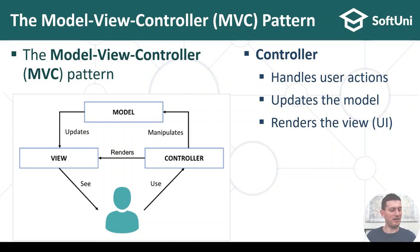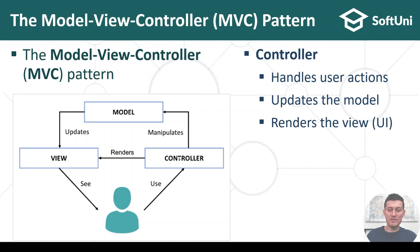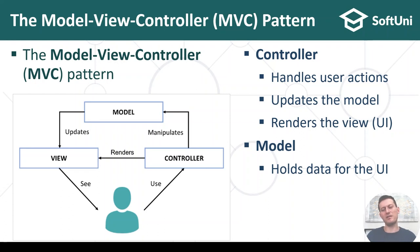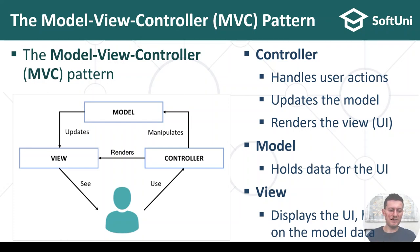They change something, prepare some data, fill a model, and send the model to the view for rendering, and the view shows something on the screen. The model holds data for the views — for example, when we show URLs, the table of URLs will have an array of URL objects as model, and the views display the UI — basically a combination of HTML plus CSS rendered by a template engine.